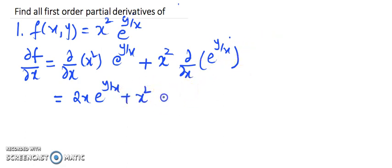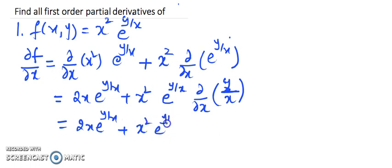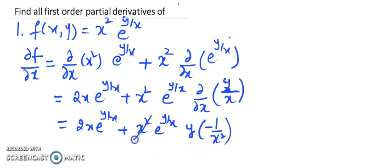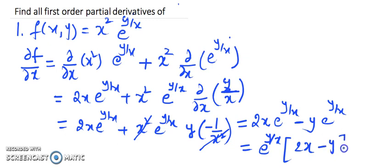Now e^(y/x) — derivative of e to the power of any function is e to the power of the same function, then further differentiation. So partial differentiation of the power y/x: y being a constant, and the derivative of 1/x is −1/x². Now x² and x² will get cancelled and we are left with 2x·e^(y/x) minus y·e^(y/x). Taking e^(y/x) common, the first partial derivative with respect to x is e^(y/x)·(2x − y).